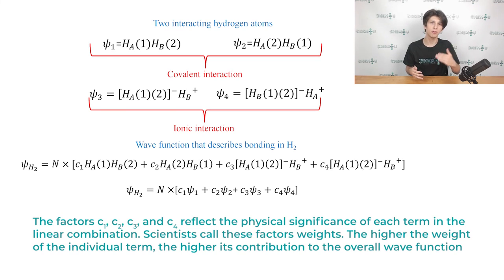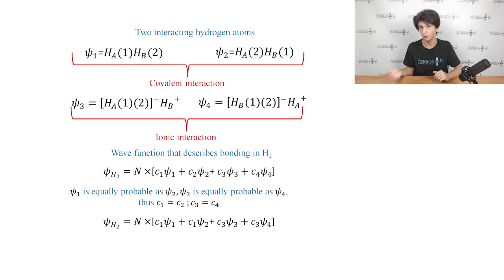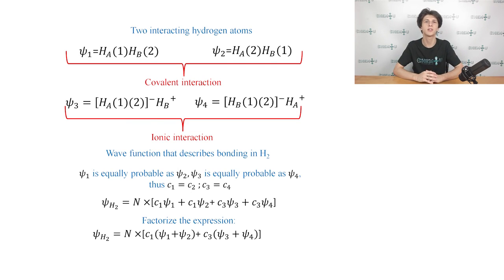The factors c1, c2, c3, and c4 reflect the physical significance of each term in the linear combination. Scientists call these factors weights. The higher the weight of the individual term, the higher is the contribution to the overall wave function. If we note that the wave functions ψ1, 2, 3, and 4 represent the unique distribution of electrons between atoms A and B, then it will be clear that the higher weights correspond to a higher probability of the existence of each configuration. Note that the configurations described by ψ1 and ψ2 are equally probable as atoms A and B cannot be distinguished in reality. That's why c1 is equal to c2. The same is true for terms ψ3 and ψ4. So c3 is equal to c4. Now we can factorize our expression and obtain the new formulation of the wave function for a hydrogen molecule.